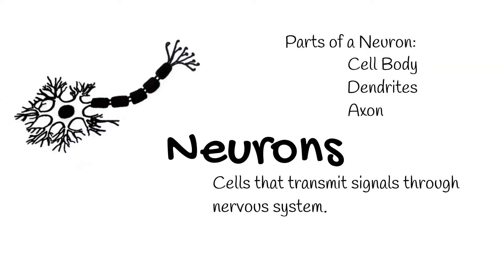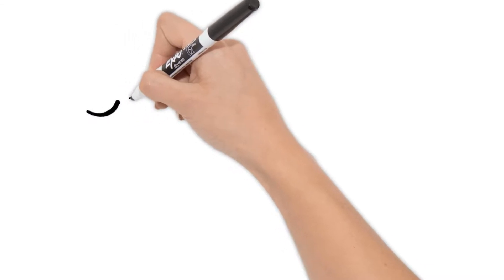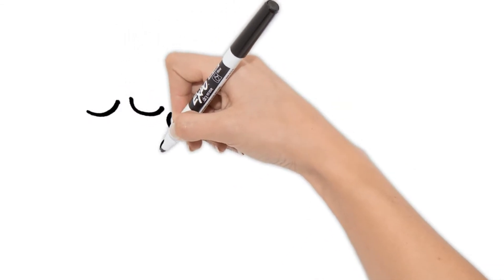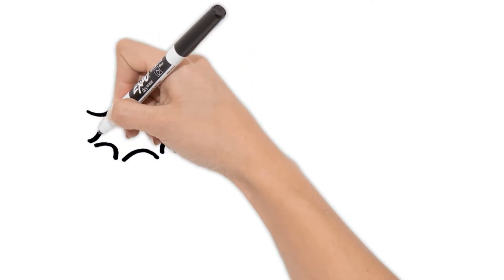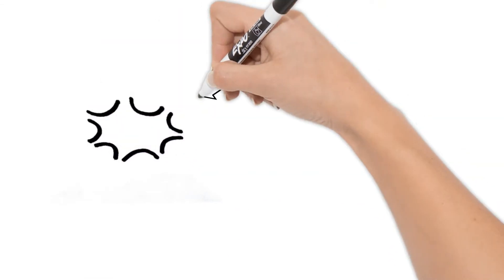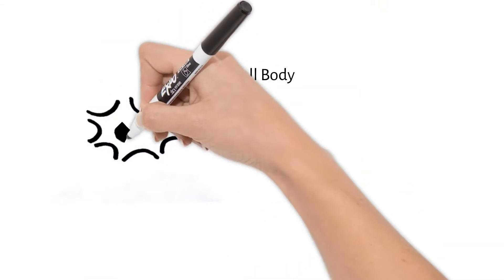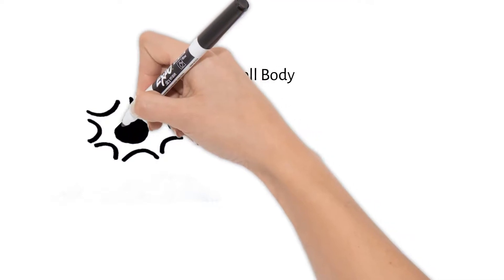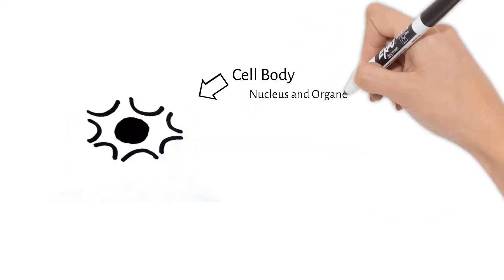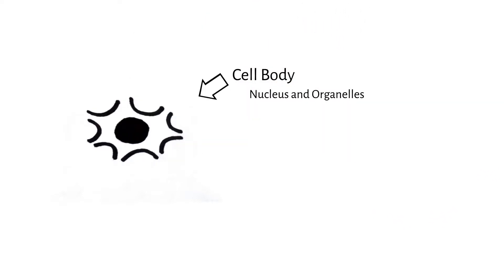Most neurons look like this one. The cell body is this bulkier end. It contains the neuron's nucleus and other organelles — mitochondria, ribosomes, endoplasmic reticulum.